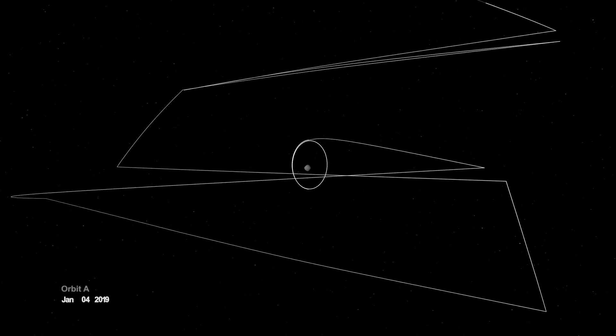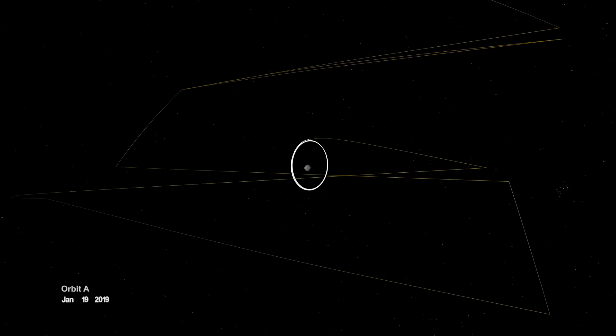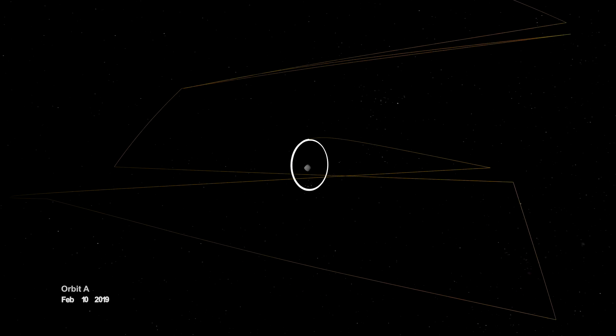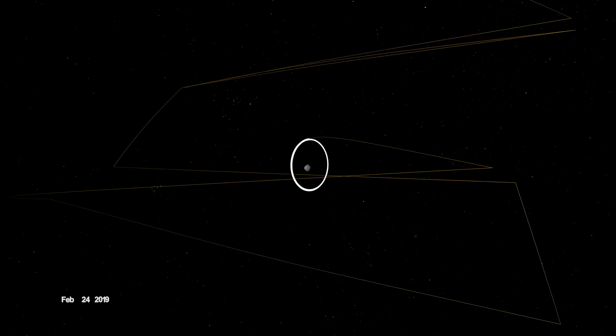On New Year's Eve, OSIRIS-REx was captured into orbit by Bennu's minuscule gravity, making it the smallest world ever to be orbited by a spacecraft.